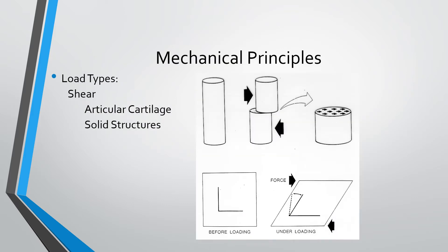Shear is a type of stress faced frequently in the body. When two structures slide across each other due to shear force — as happens between joints — this is why we have a tangential arrangement of collagen fibers on top of the most superficial layer of articular cartilage, to protect the collagen underneath against shear forces. A solid structure such as bone, a labrum, or a meniscus will also deform under shear forces.